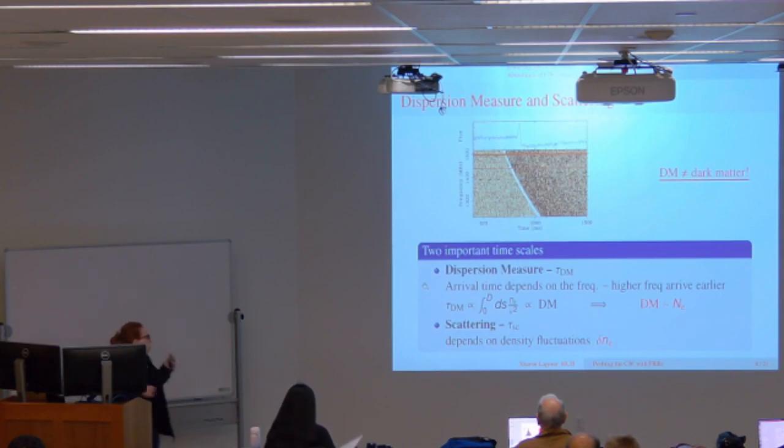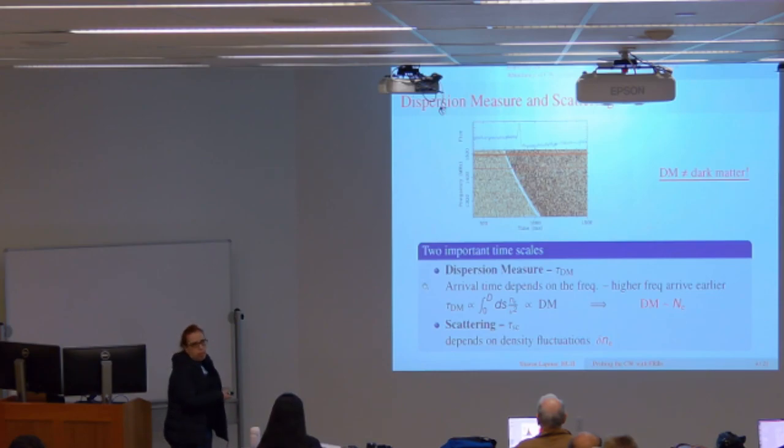I'll start with the scattering time scale and at the end we'll go back to the dispersion measure. One important thing to keep in mind is that the dispersion measure depends basically on the column density, while the scattering measure depends on the fluctuation of the free electron density.